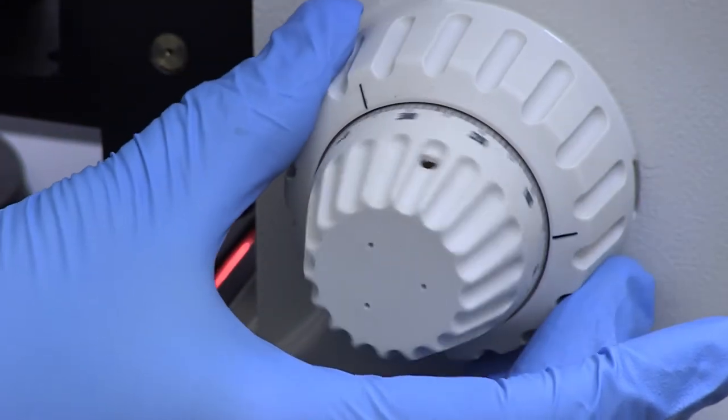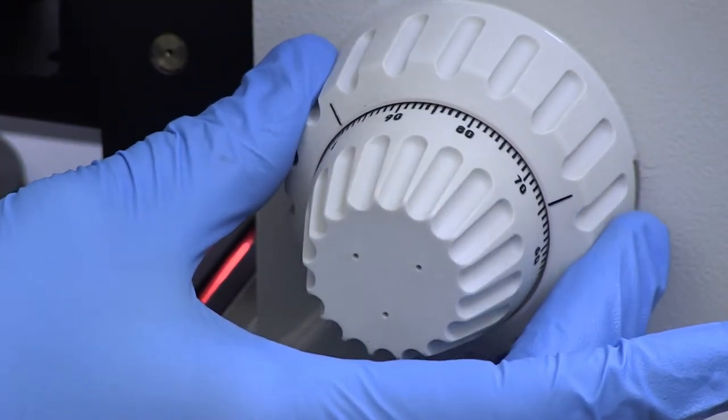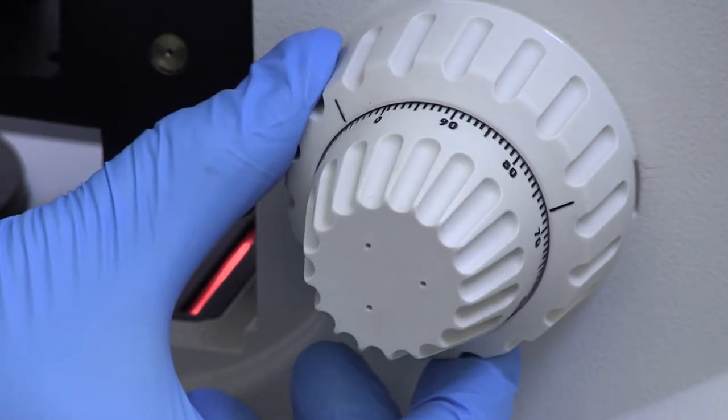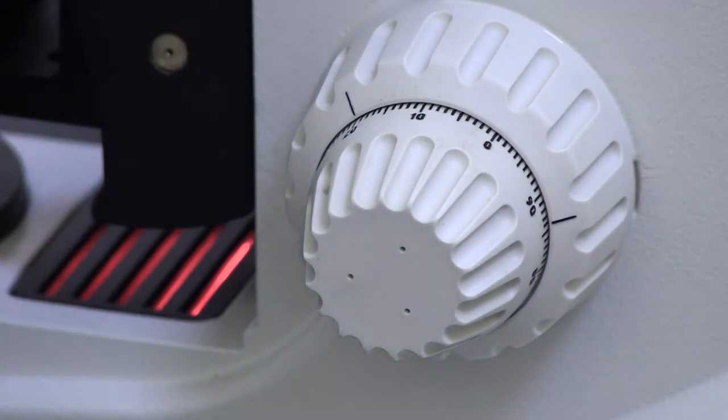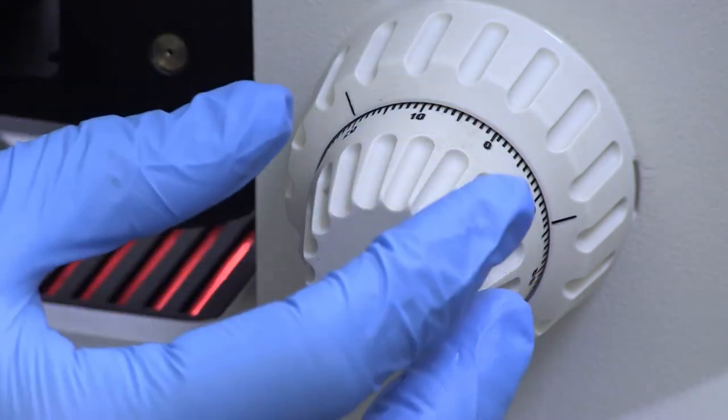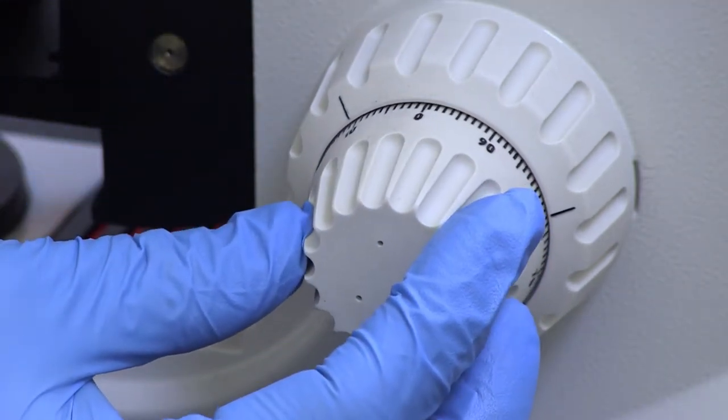Two concentric focusing knobs are located on each side of the microscope. The large outer knob is the coarse focus adjustment, while the smaller inner knob is the fine focus adjustment.